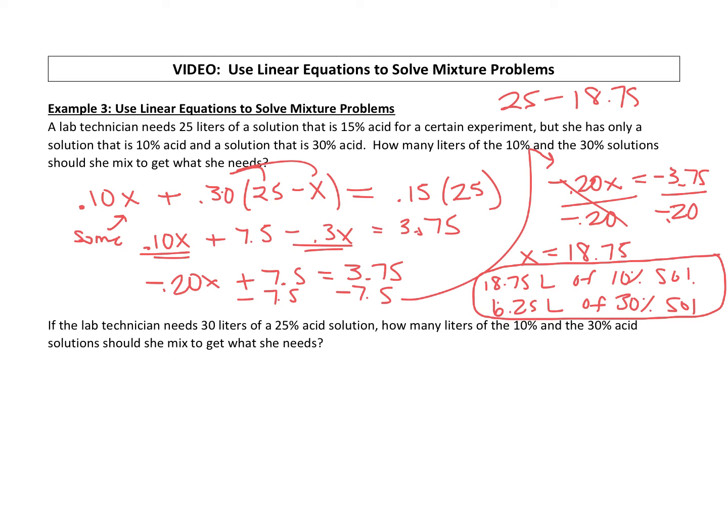So she's going to take 0.10 acid solution and we're going to multiply it by however many liters of that she has, plus she has her 0.30 solution, and this time she needs 30 total liters, so we're gonna take the 30 liters and subtract out x.